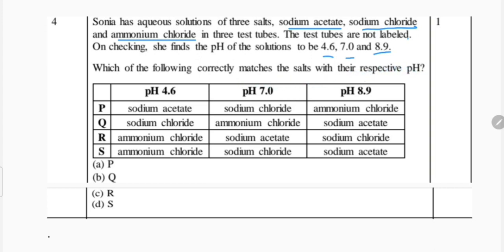When she checked the pH and got 4.6, 7, and 8.9, you have to tell which salt has which pH. For example, if the test tube has pH 4.6, which salt should be there? This is what you have to find out.